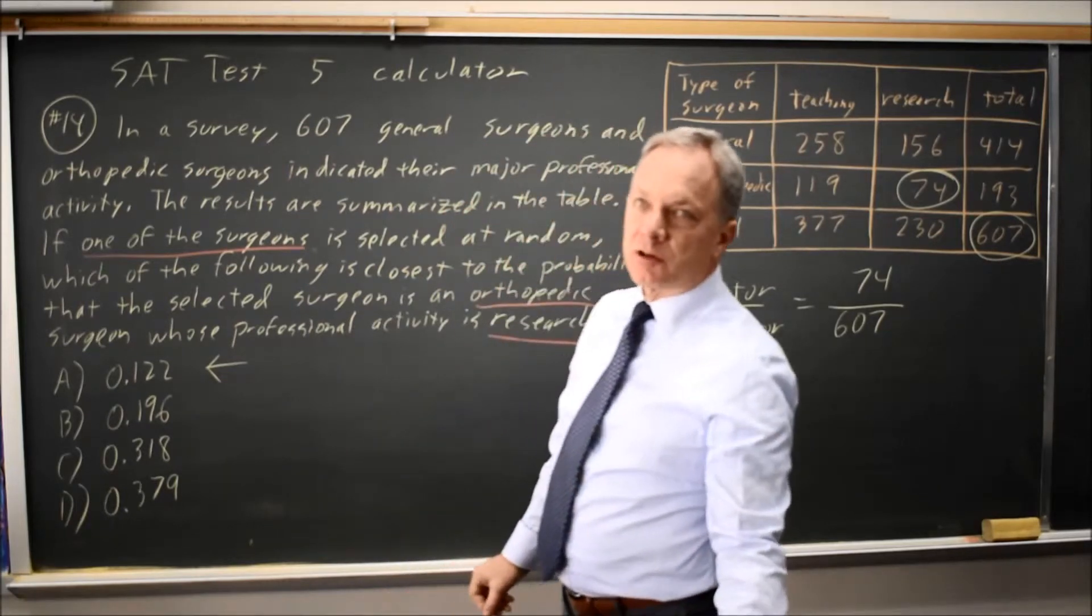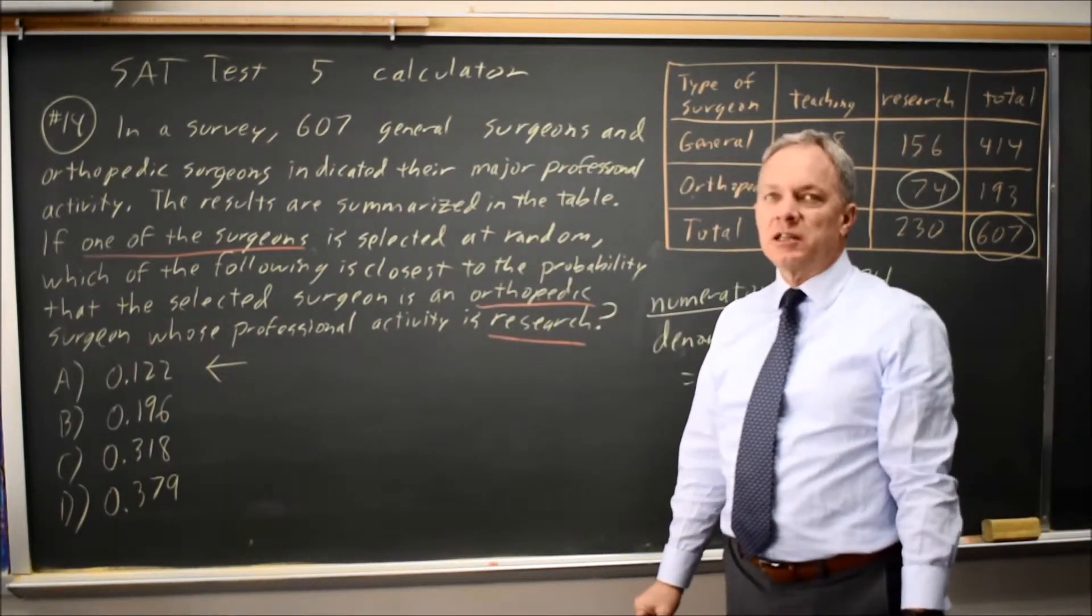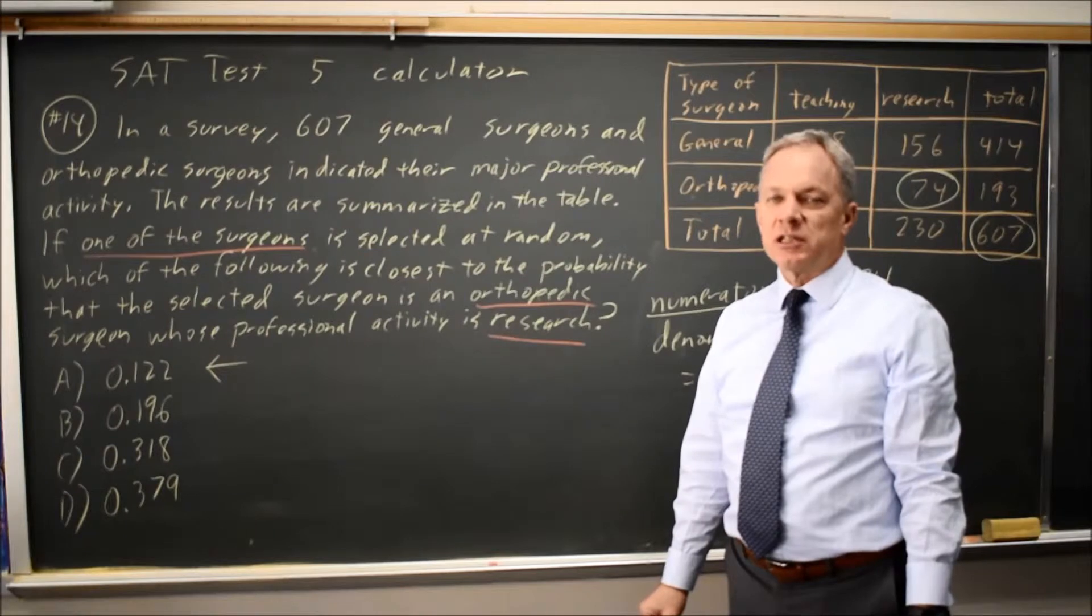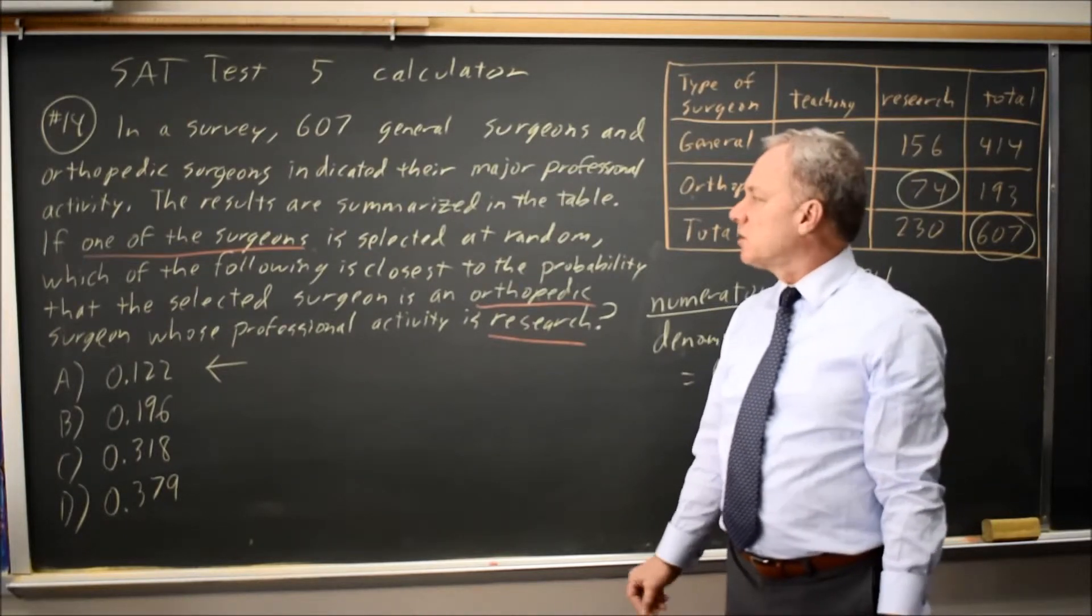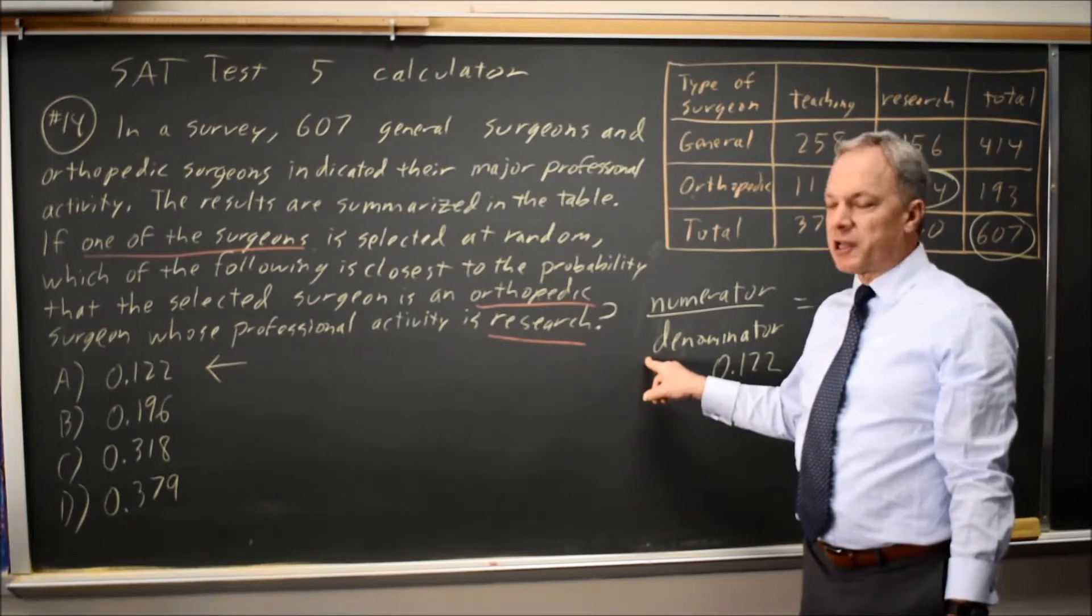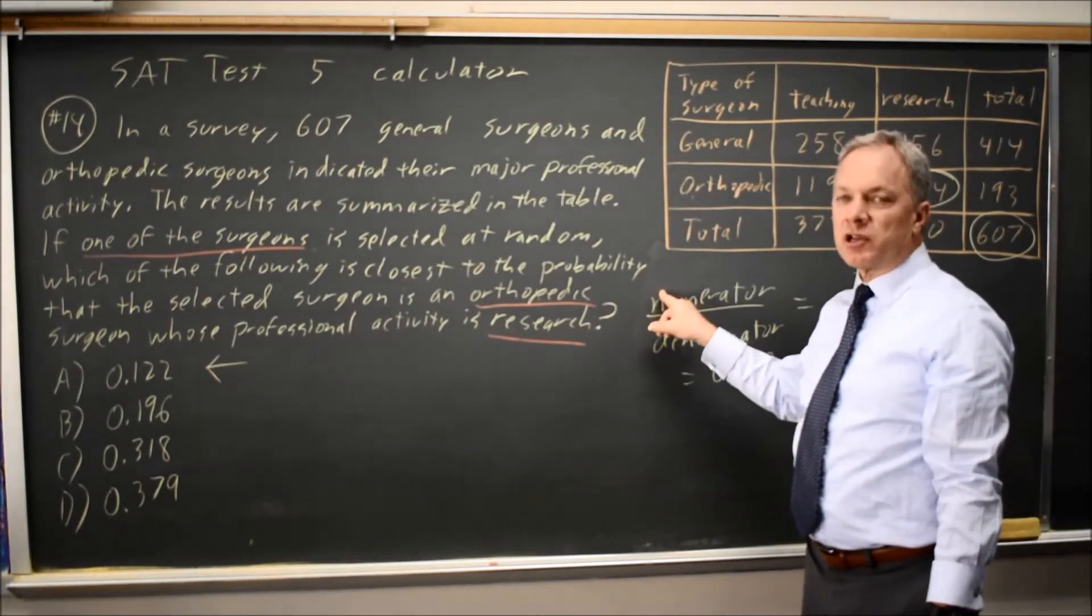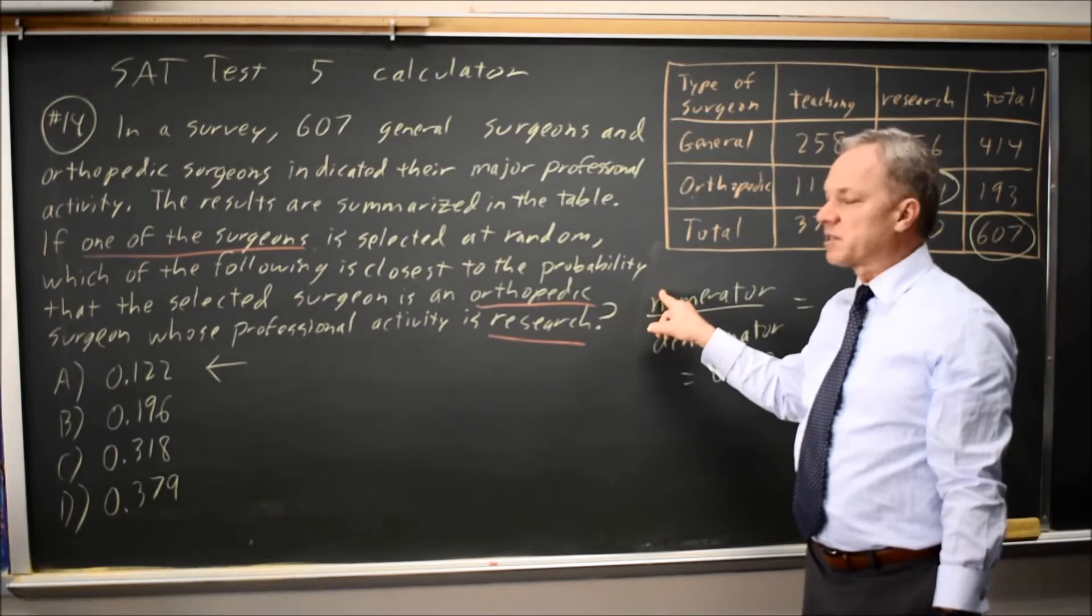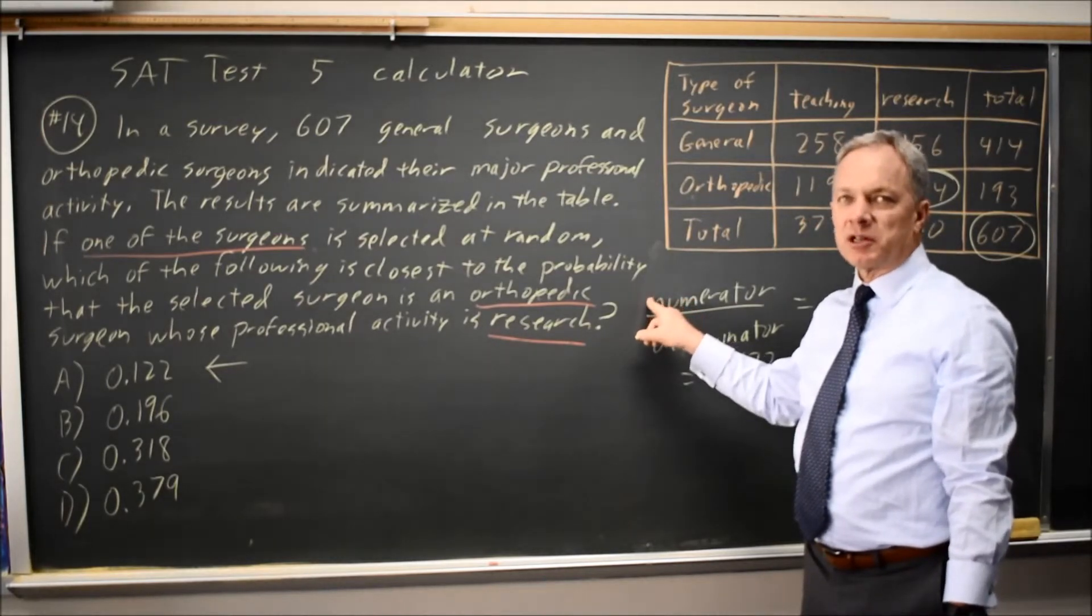In these questions, you're always looking for the numerator and the denominator, and then reread to make sure you've identified the two groups properly. The denominator is the group from which you choose the random individual, and the numerator is from that group which individuals count as a success that you're looking for the probability of having.